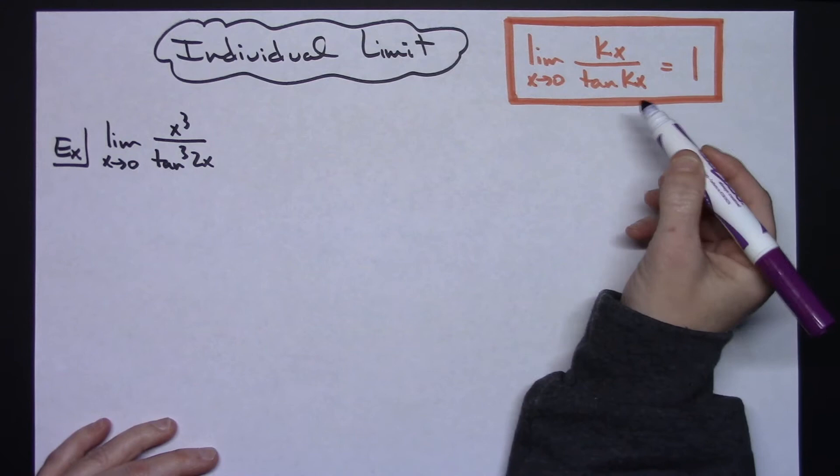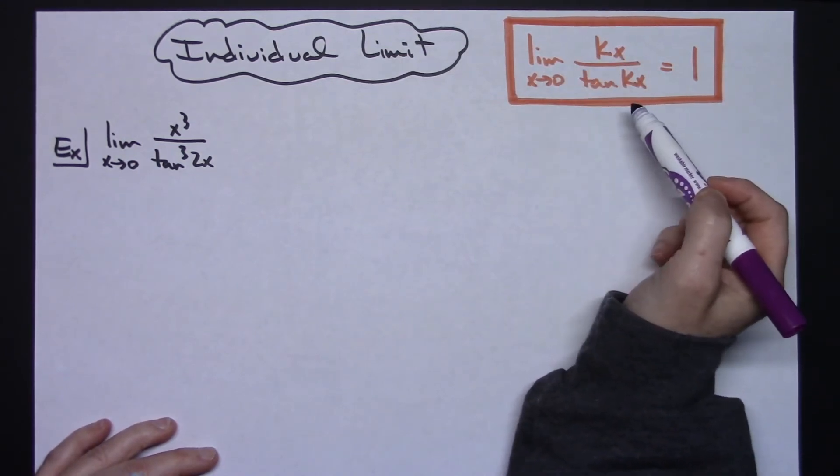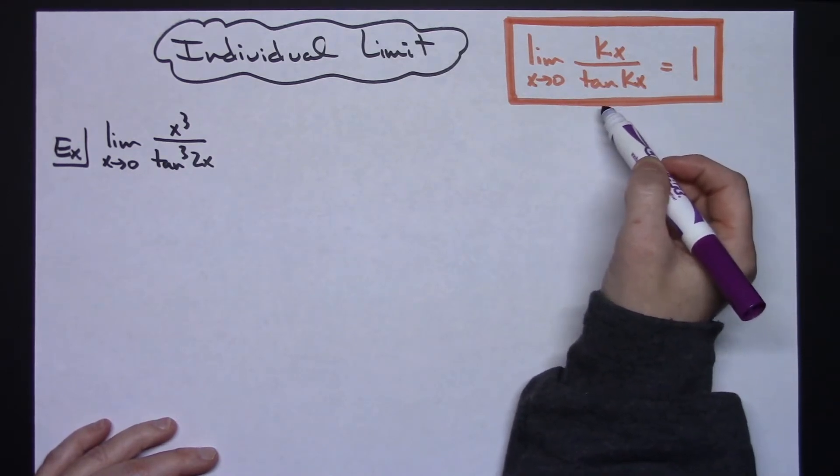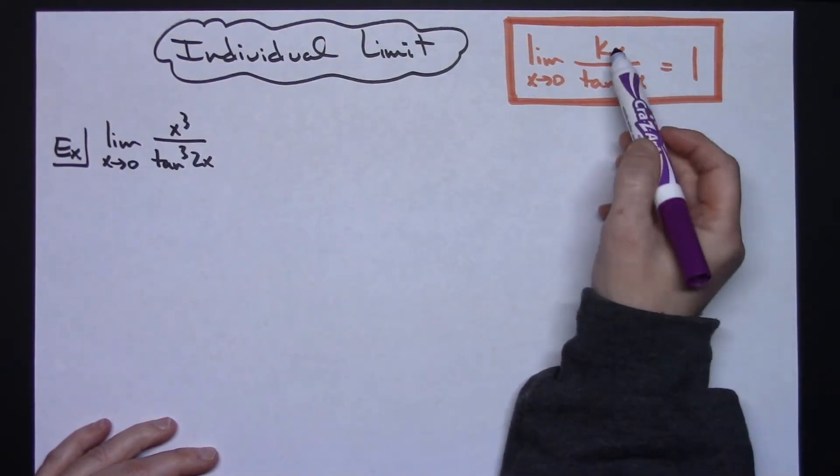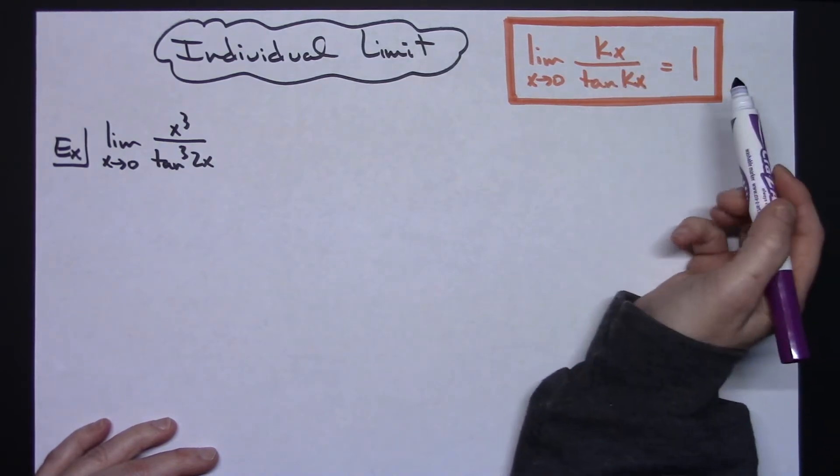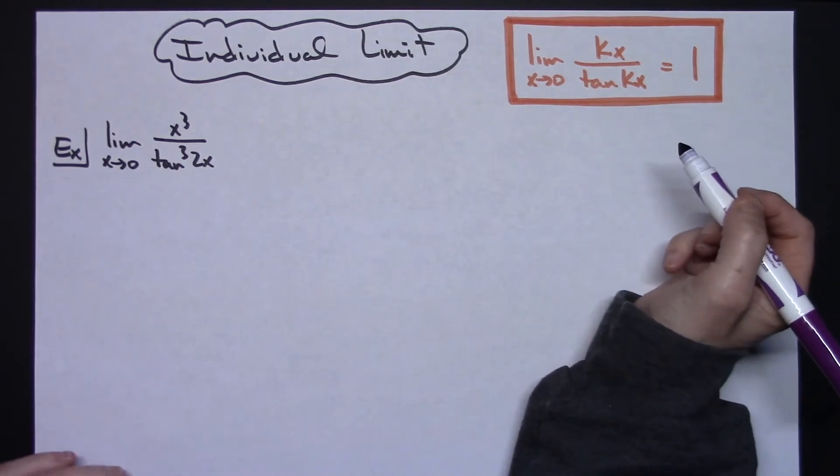This is a limit that can be worked out algebraically to prove that, because it's not typically given to you in a calculus book. However, I do allow my students to use this because this is known. As long as I've got kx and kx matching there with the same constants, this does turn out to be 1 every time so I allow my students to use it.